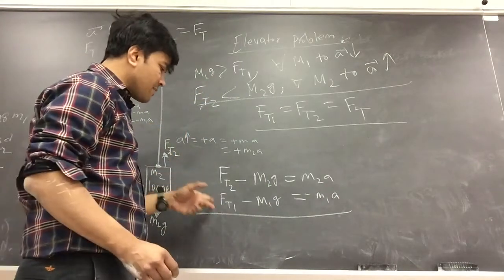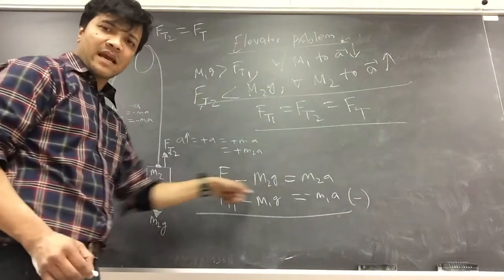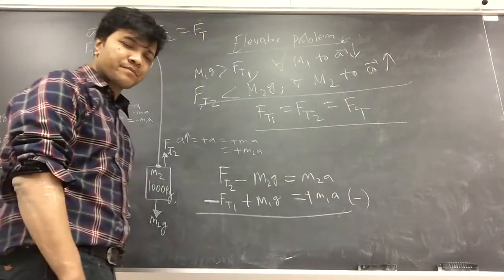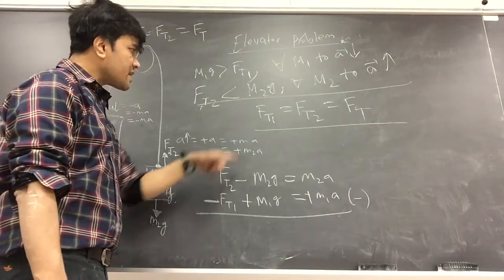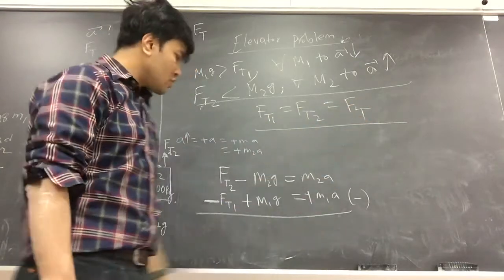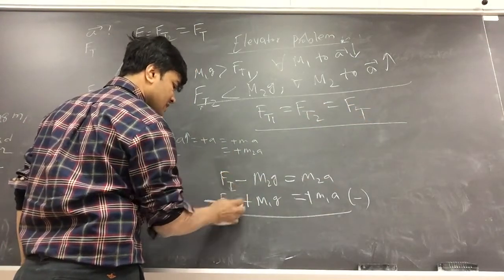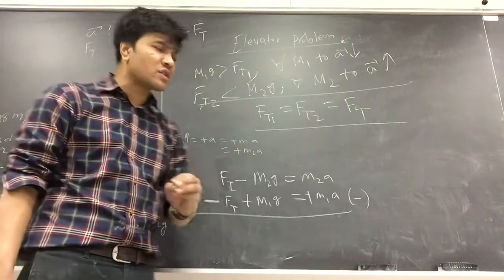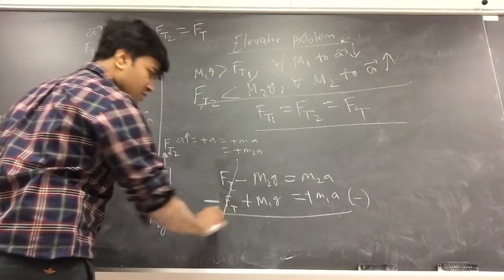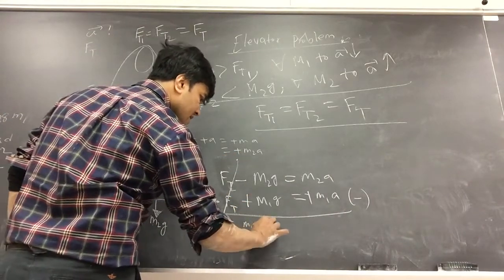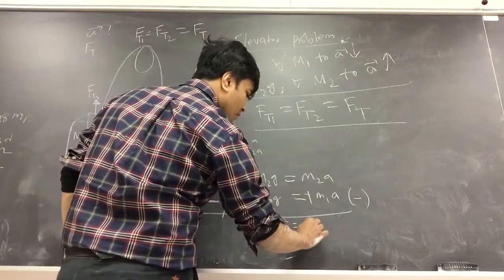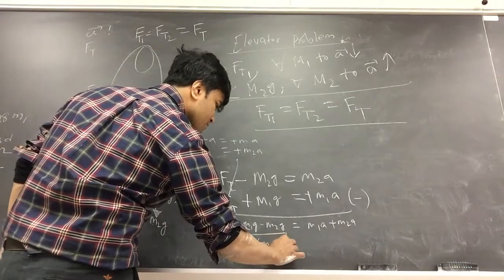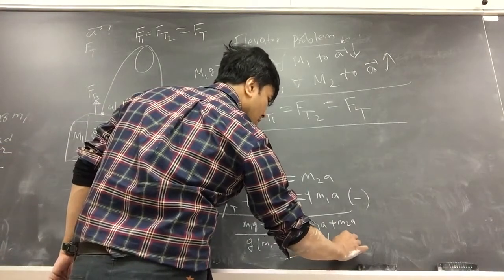We multiply the m1 equation by negative one, which flips the signs. Since FT1 equals FT2 equals FT, the tension terms cancel out. We're left with m1·g minus m2·g equals m1·a plus m2·a. Factoring: g is the common factor on the left giving (m1 minus m2), and a is the common factor on the right giving (m1 plus m2).